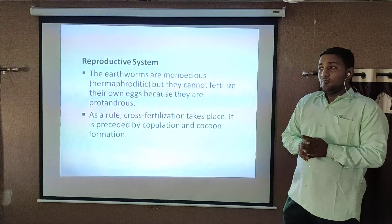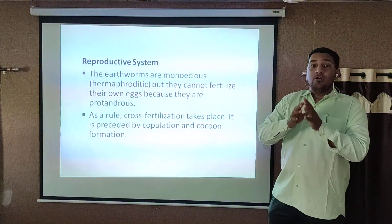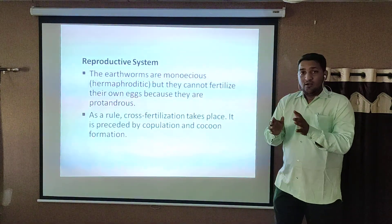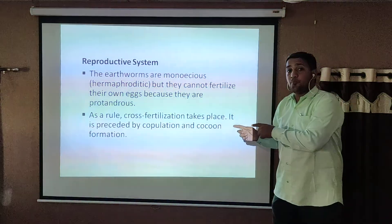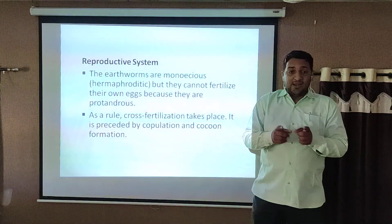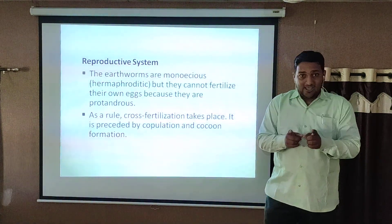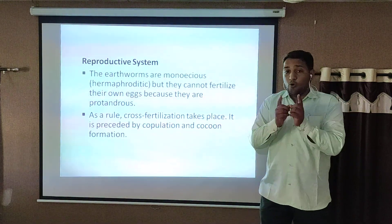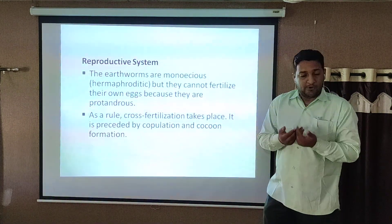Generally, earthworms are monoecious. The male reproductive organ and female reproductive organ are present in one organism. They are also protandrous, meaning the male and female reproductive organs are present in a single organism, but they cannot fertilize their own ova by their own sperm.